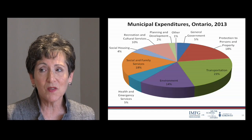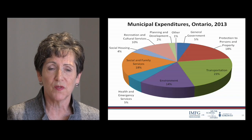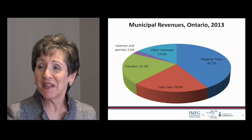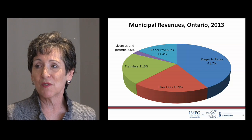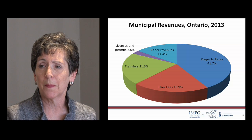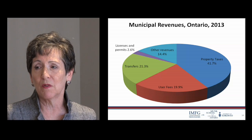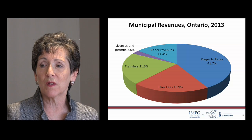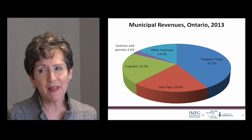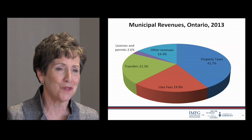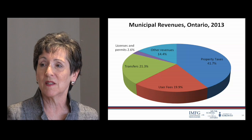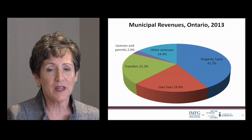How do they pay for them? The biggest chunk is property tax, accounting for almost 42% of local government revenues — a figure that is similar across Canada. User fees account for almost 20%, including fees for transit, water, recreation centers, and similar services. Transfers account for 21%, which would be higher in Ontario than the rest of Canada due to social service costs covered through provincial transfers. There are also licenses, permits, fines, and other miscellaneous revenues.